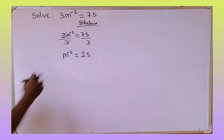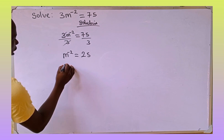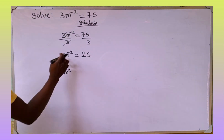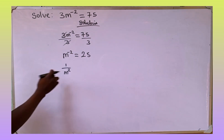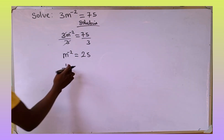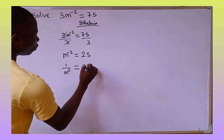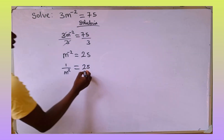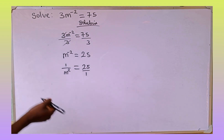In the left hand side, this m to the power of minus 2 can also be written as 1 over m to the power of positive 2. When m to the power of minus 2 comes down it will change to positive 2, which is equal to 25. And 25 can also be written as 25 over 1 — it's still the same as 25.